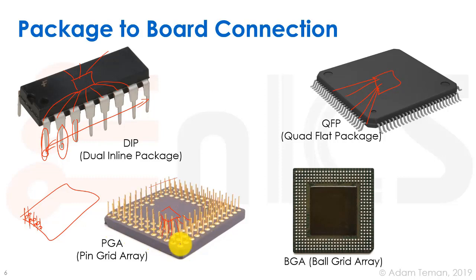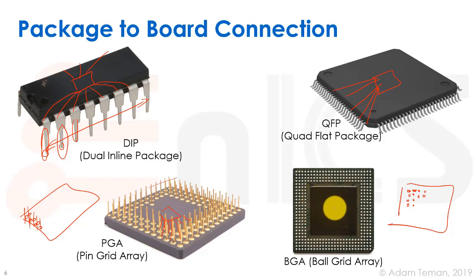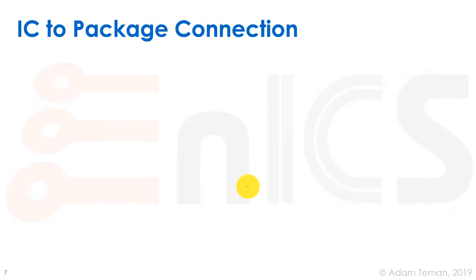Finally we have the BGA, or Ball Grid Array, which is similar in setup to the PGA. Instead of holes, the board has landing pads. We flip the package over, place it on the pads, and when we heat up the board and package, the balls melt and form the connection. We don't have to solder each one individually — one thermal process connects everything at once. The BGA is used for high-pin-count chips and is much more efficient, though more expensive.